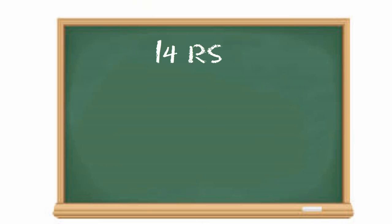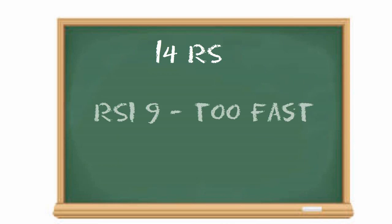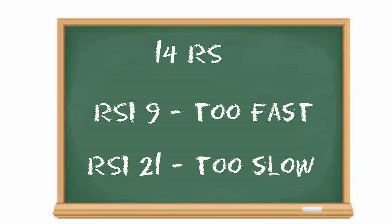It's important to accurately understand the behavior of the RSI with different relative strength values and why the 14 period is most popular. The RSI 9 is very quick to reach overbought and oversold levels, which may produce too many false signals. The RSI 21, in turn, is very slow and may never provide signals — in actual fact, the RSI 21 very rarely reaches overbought or oversold levels.